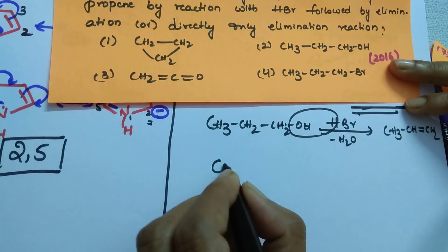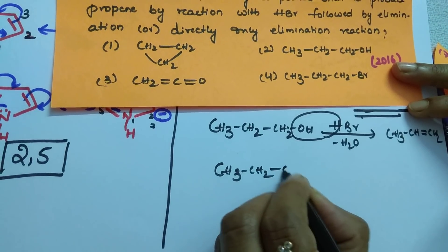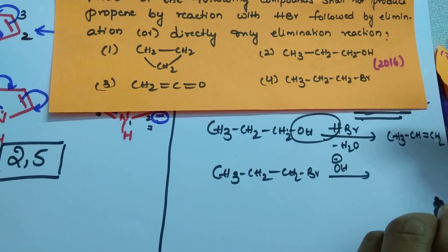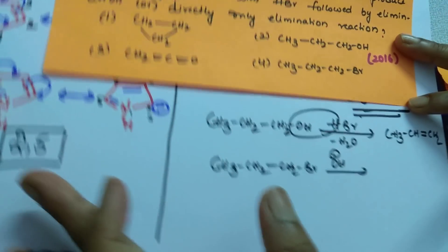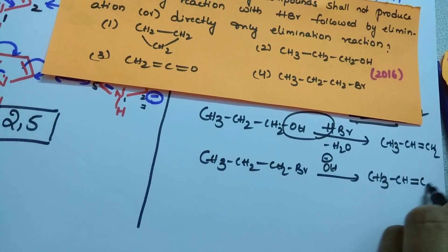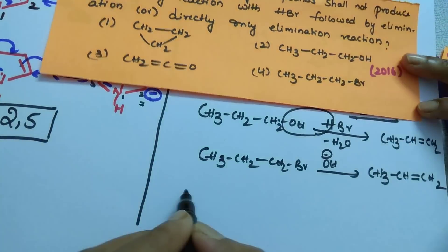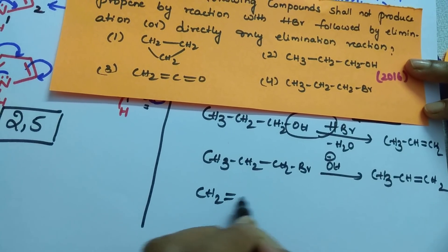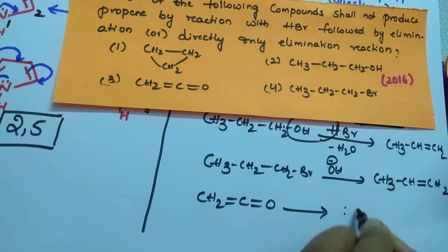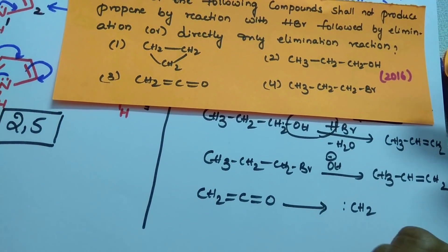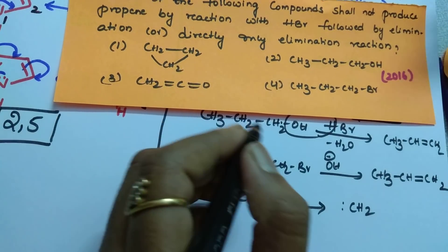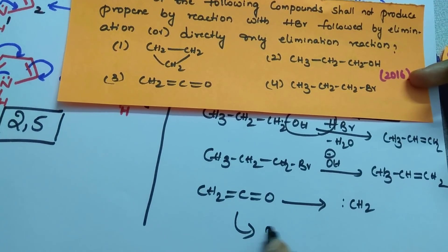And see here, fourth option. CH3, CH2, CH2, Br and take a strong base like OH minus. In the presence of strong base, then what happens? Elimination reaction take place. It results in the formation of again propene. So, this one is called ketene. CH2 double bond, C double bond, O. This one actually, it forms, they prefer to form carbenes, not propene. That too, it is a two-membered carbon. It cannot form a three-membered carbon like propene.